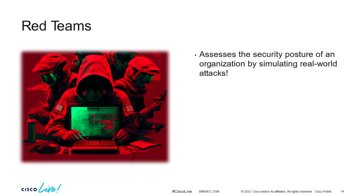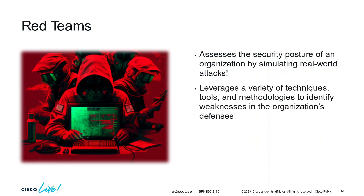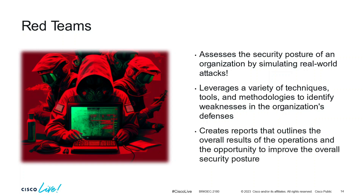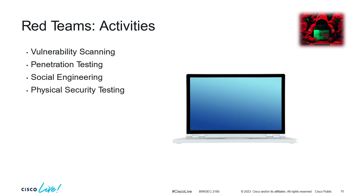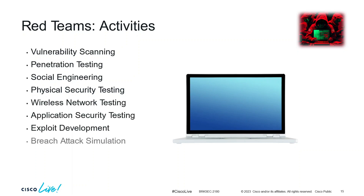Red teams are the offensive side — they're not the bad guys, but they act as the adversary. Their goal is to simulate real-world attacks and test our security posture using a variety of tools and methodologies to find weaknesses in our defenses, then create a report giving a better overall understanding of where those weaknesses exist. Their activities include vulnerability scanning, penetration testing, social engineering, physical security testing, wireless network testing, application security testing, exploit development, breach attack simulation, and threat intelligence research.